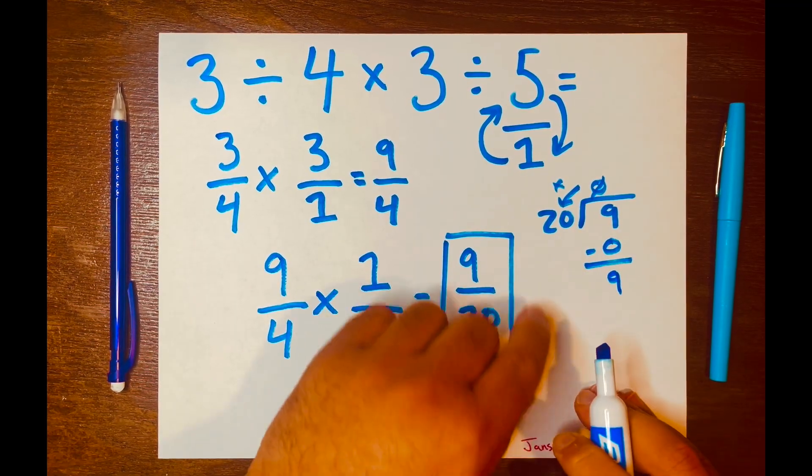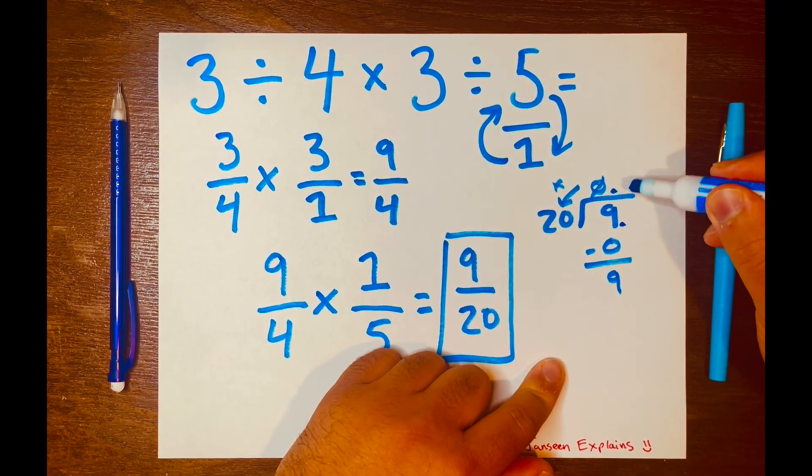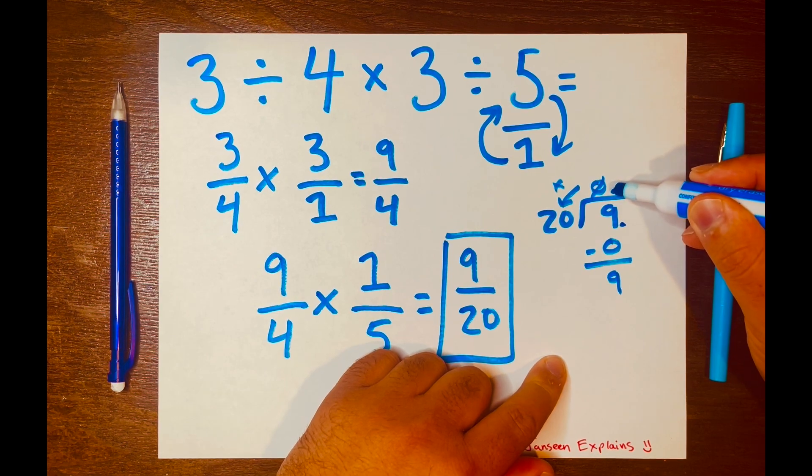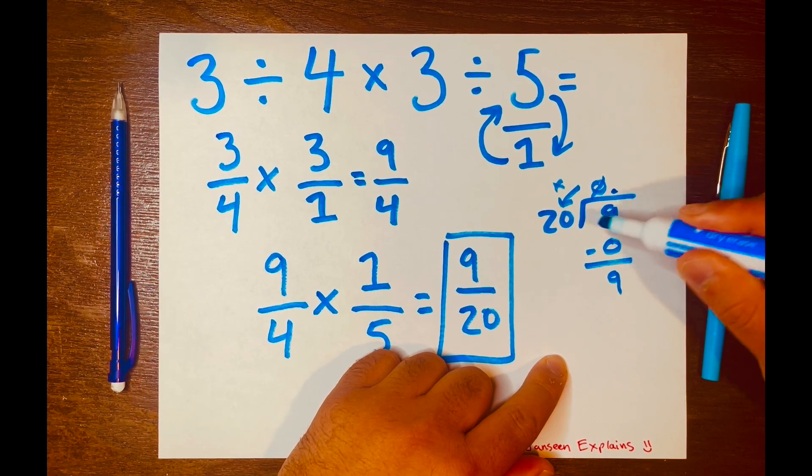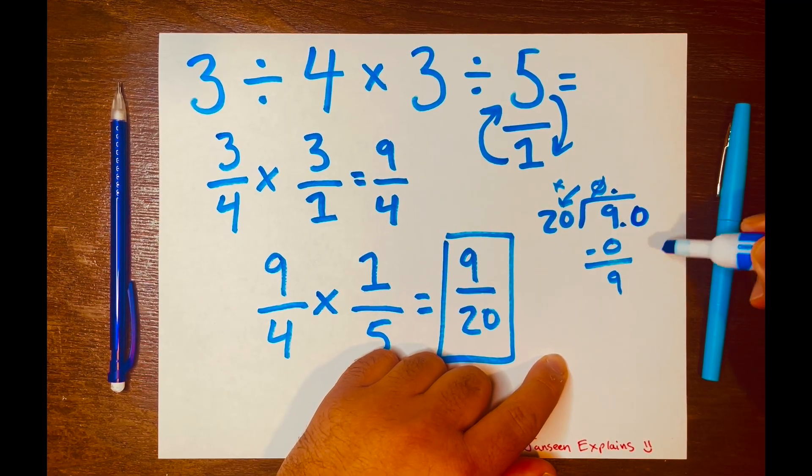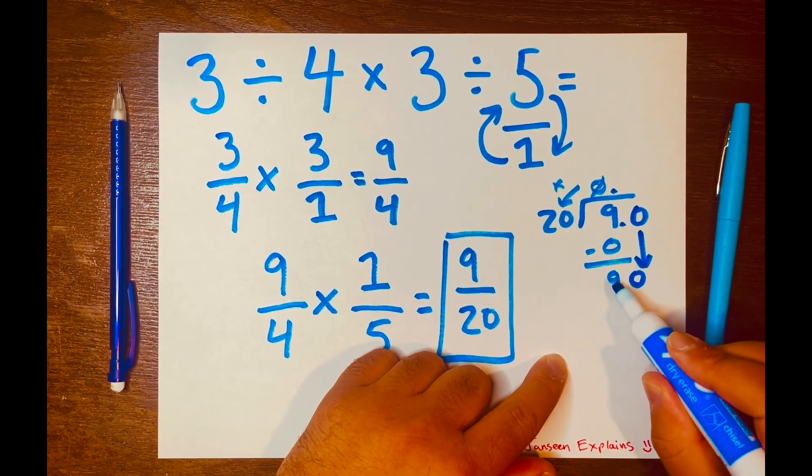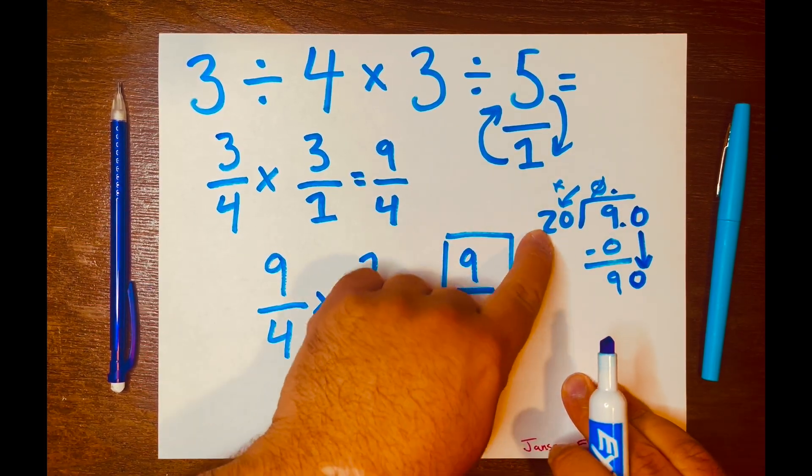Now how many times can 20 fit into nine? You cannot, so we're going to borrow a zero. I added a decimal above the long division symbol and a decimal after the nine here, and I'll write a zero and bring down the zero. And now we have 90. How many times can 20 fit into 90? Well, four times.